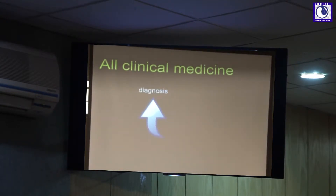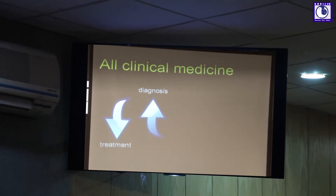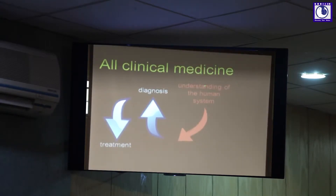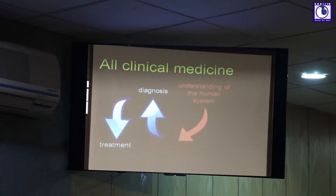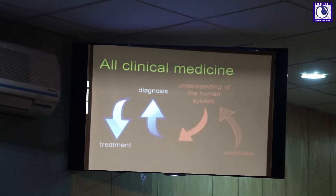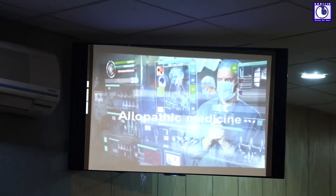Ayurveda has two aspects: health and disease. When we talk of the role of Ayurveda in handling disease, it's a clinical medicine. The two major factors important in any clinical medicine — be it Ayurveda, homeopathy, or allopathy — are diagnosis and treatment. All clinical medicines begin with diagnosis and end with treatment. The treatment is defined by the diagnosis, which is defined by how the human system is understood. And that understanding is defined by the basic sciences which have contributed to these medical systems. No medical system is a fundamental science; all are applied sciences.